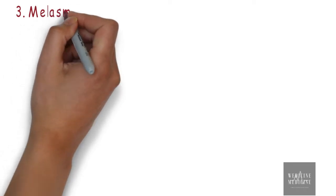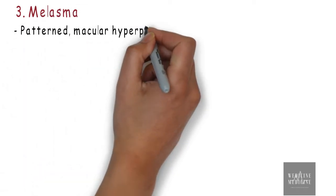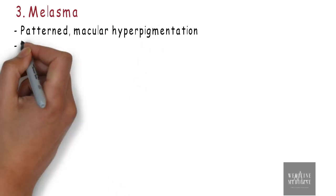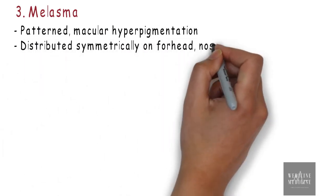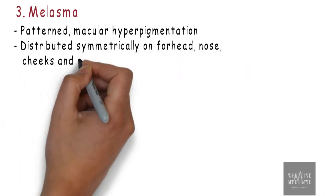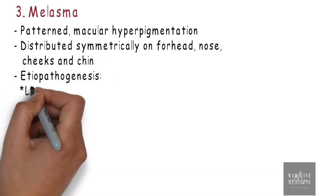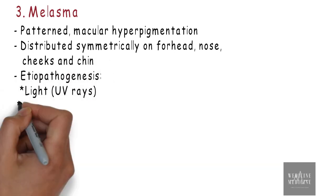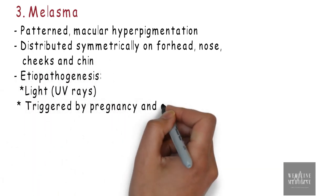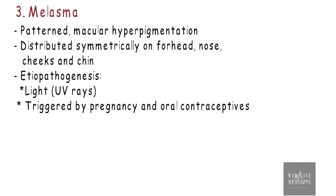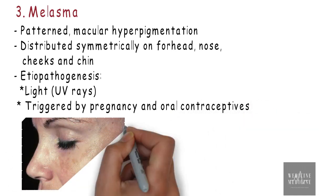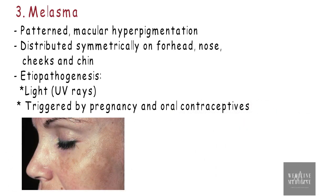The next hyperpigmentation disorder is melasma, which presents as patchy macular hyperpigmentation distributed symmetrically on the forehead, nose, cheeks, and chin. Regarding pathogenesis, UV rays or hormonal imbalance resulting from pregnancy and oral contraceptives can trigger formation of melasma.